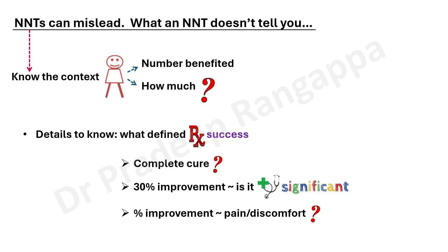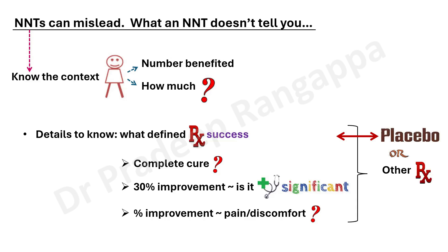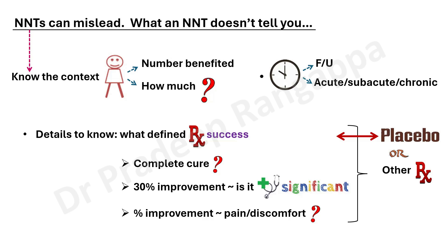You must also consider whether there was a qualitative improvement in quality of life, whether the comparison was with placebo or another treatment, and for how long patients were followed up. Context matters — whether it was an acute, subacute, or chronic situation all influence whether NNT should influence your treatment decisions.